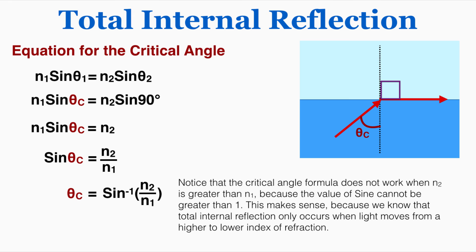Notice that the critical angle doesn't work when n₂ is greater than n₁, because the value of sine cannot be greater than 1. This makes sense because we know that total internal reflection only occurs when light moves from a higher to a lower index of refraction.